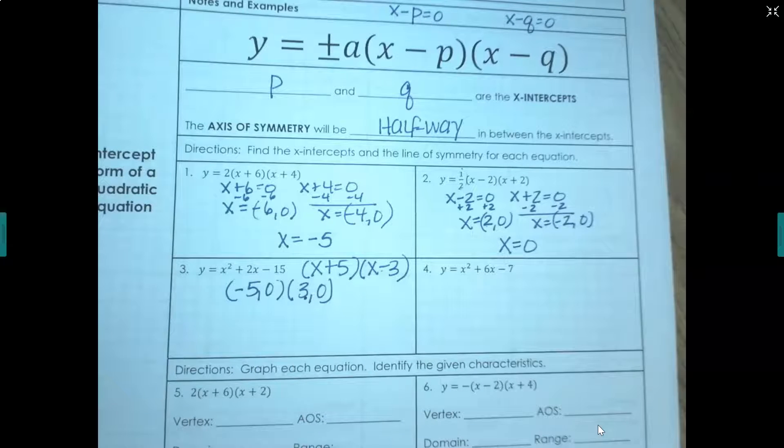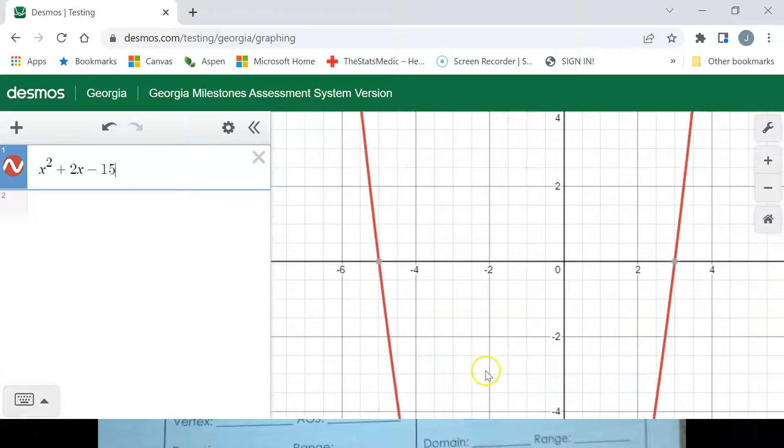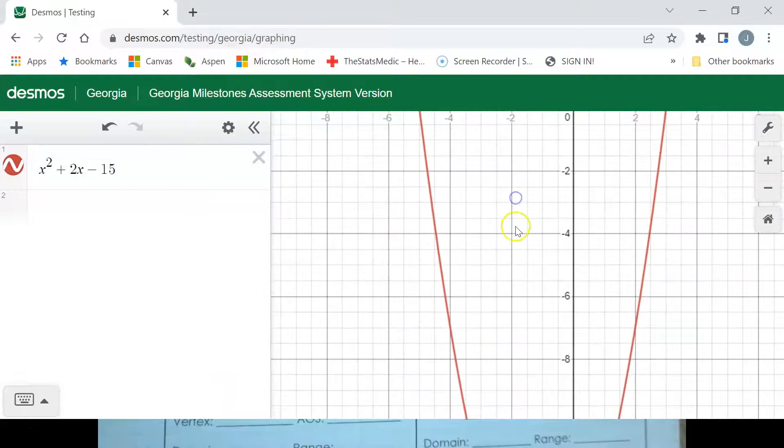Halfway between negative 5 and 3. Well, let's look. Where's our vertex?